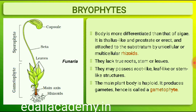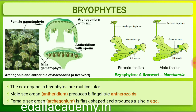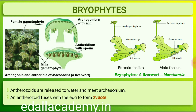They lack true roots, stem or leaves, but may possess root-like, leaf-like or stem-like structures. The main plant body of the bryophyte is haploid; it produces gametes and hence is called a gametophyte. The sex organs in bryophytes are multicellular. The male sex organ is called antheridium; they produce biflagellate antherozoids. The female sex organ called archegonium is flask-shaped and produces a single egg. The antherozoids are released into water where they come in contact with the archegonium.